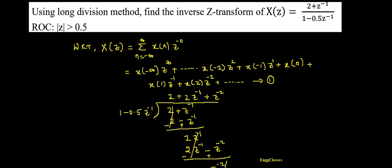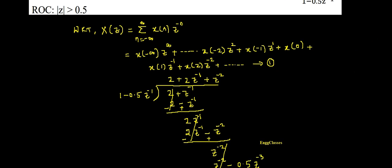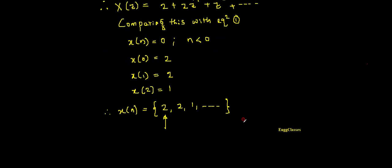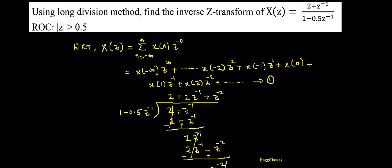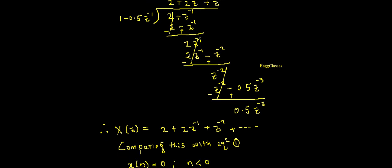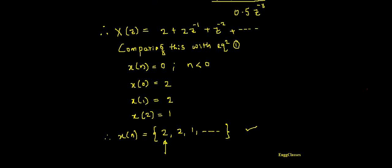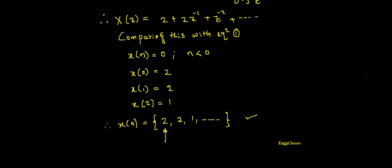To summarize: if ROC is |z| > some value, expand in negative powers of z; if |z| < some value, expand in positive powers of z. Compare with x(n) to get the final answer. I hope everyone has understood. If there are any doubts, please post them in the comments. Subscribe to NG Classes for more videos on signals and systems. Thank you for watching.